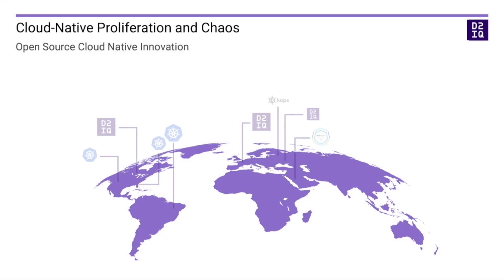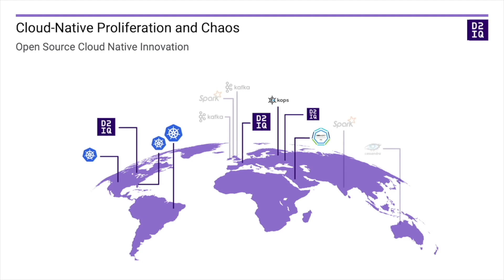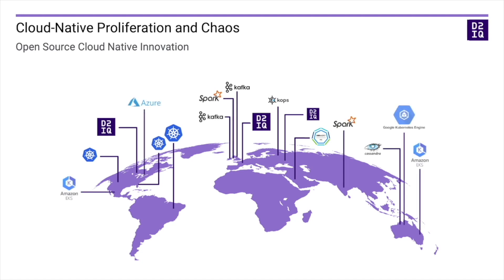What we're seeing is, as cloud-native becomes more popular, an explosion of Kubernetes cluster installs across various locations — on-premise, in private cloud, in public cloud, such as Amazon's EKS, Azure's AKS, and Google's GKE.